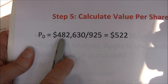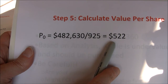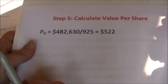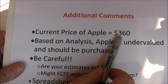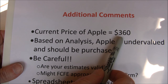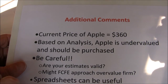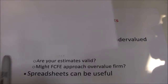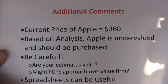All that's left is to convert to a per-share price. Take $482,000,000,000 and divide by 925,000,000 shares outstanding, giving us a share price of $522. Based on this calculation, Apple would be worth $522 per share. When I prepared this, the current price of Apple was around $360, and after their earnings announcement it was up around $390 — but at the time of filming the current price was $360. Based on that, Apple is undervalued and should be purchased, since it's worth $522 but we can buy it for $360 — a discount of about $160 per share.